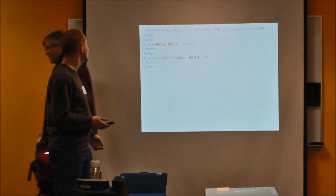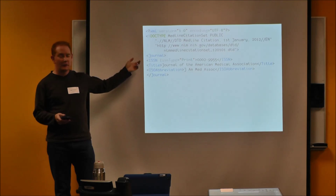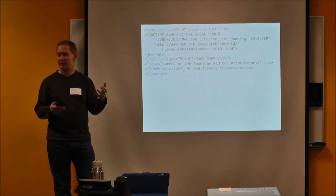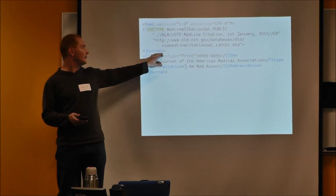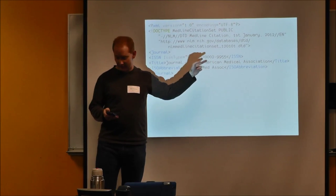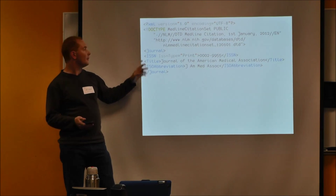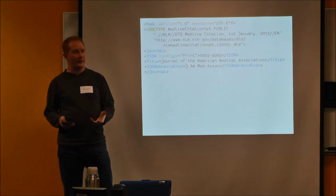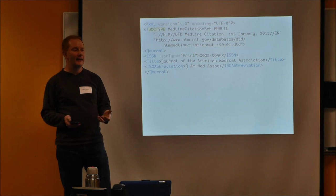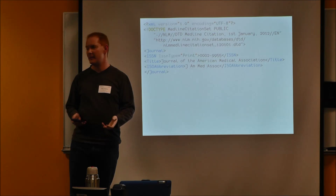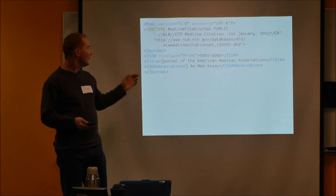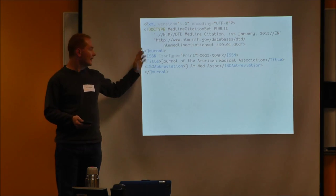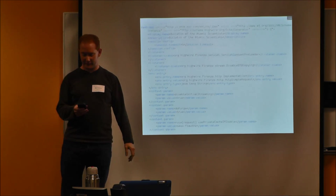XML is a lot more than HTML. You can do totally different things that look a little like HTML, but because they're XML they get to define their data in a more precise manner. It has elements between angle brackets, it has attributes, and it has text inside them. However, it gets to make up its own names for everything. This is a journal element from Medline — a collection of information about biomedical documents published since about 1965, with millions of records.